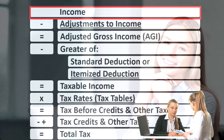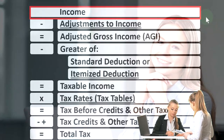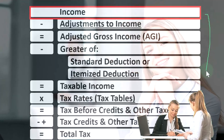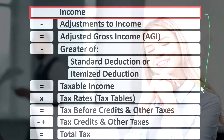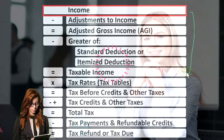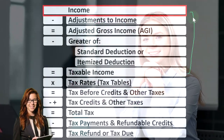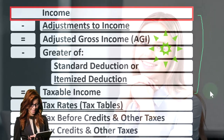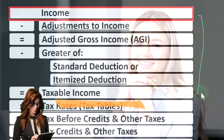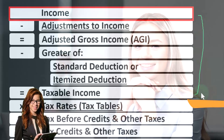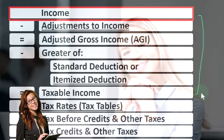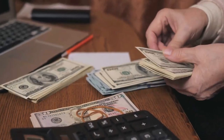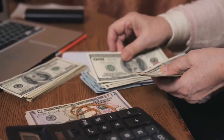Looking at the income tax formula, we're still focused on line one — income — remembering that the first half of the income tax formula is in essence an income statement, although a strange one. Income up top, the equivalent of expenses being the deductions, getting us down to the equivalent of net income, that being taxable income. Our goal is the opposite of a normal goal for an income statement: to have the taxable income, the bottom line, as low as possible to reduce taxes.